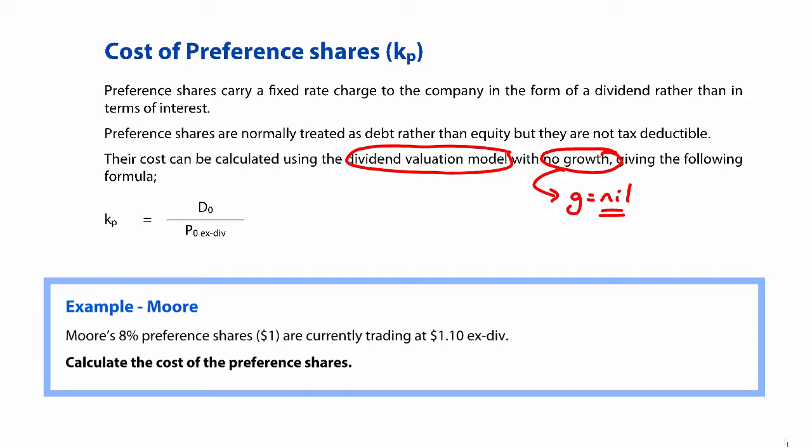So therefore, what we have and what you will need to remember is that the cost of preference shares is the dividend divided by the price ex-div. And if you want, you can multiply it by 100 to convert it into a percentage. So essentially, the cost of preference shares is the cost of equity, but with a growth rate equal to zero because your dividend does not grow as we pay a constant annual dividend every single year based upon the percentage, coupon rate, and the par value.